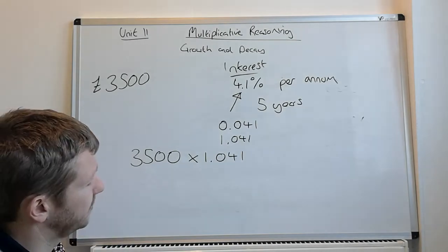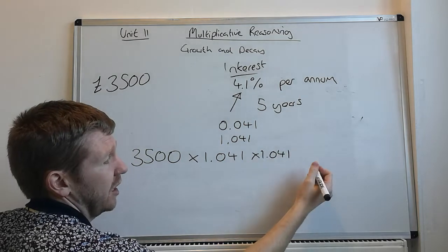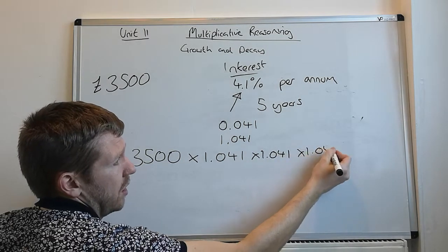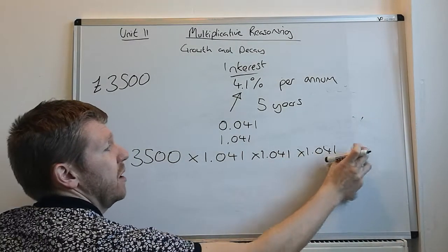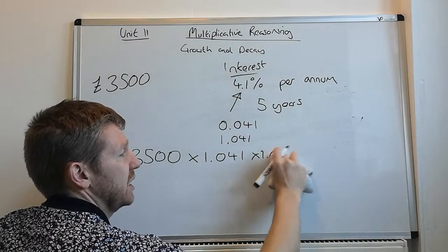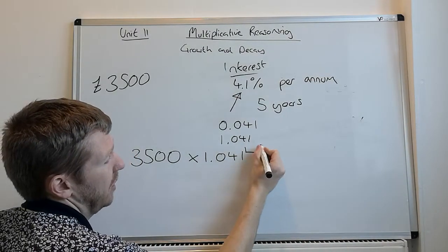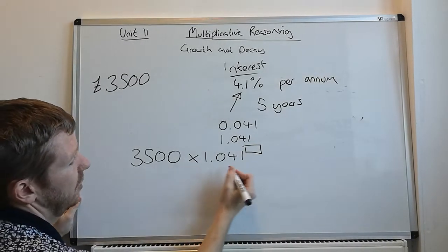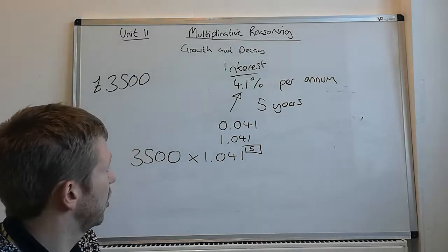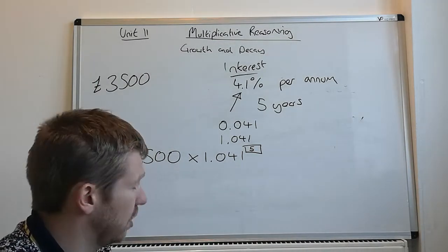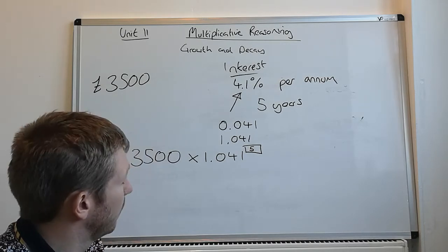And then you can do that times by 1.041. That will be the end of the first year. You can then do it again, 1.041. That will get the end of the second year. Third year, fourth year, fifth year. Just keep writing it. But, hopefully you remember that you don't need to keep writing that repeated multiplication. And what we can do is we can go up to the power up here. It's for 5 years, so we put it to the power of 5.